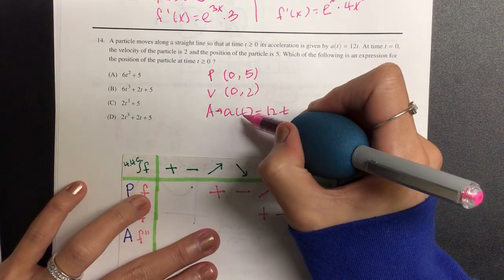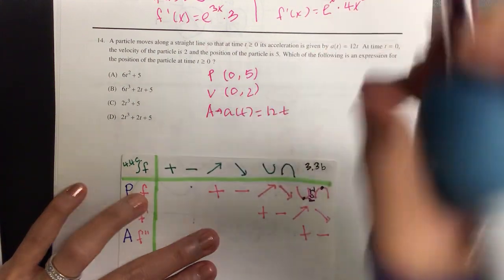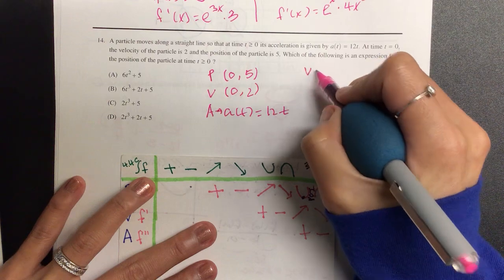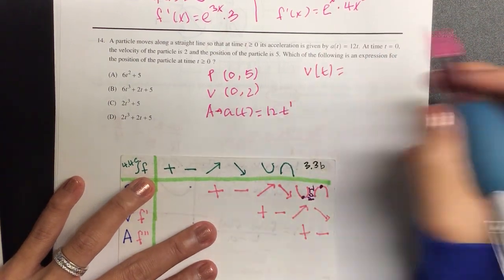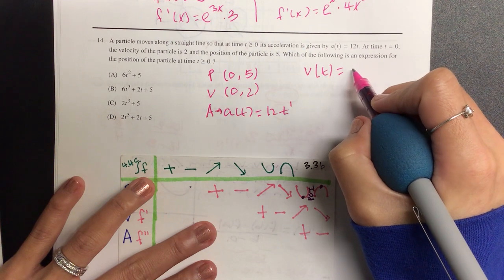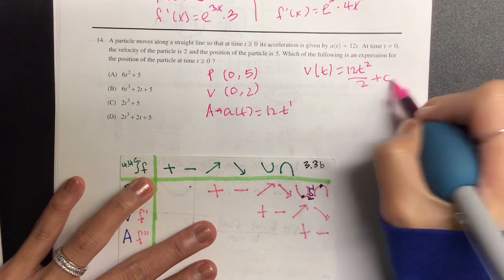So let's anti-derive the acceleration to get the velocity. Plug in zero and two to find the c and anti-derive again. So we have v of t is equal to, let's write the understood one. So we have 12t squared, one more, divided by two, plus c.